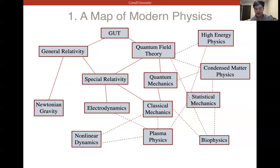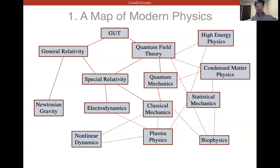We also have biophysics, combining biology and physics, using techniques from classical mechanics, statistical mechanics, quantum mechanics, and even quantum field theory. There's also plasma physics, which is basically classical mechanics, electrodynamics, statistical mechanics, and nonlinear dynamics. These are all very interesting and promising fields. Maybe there are other fields like AMO and many others. All the ideas we are going to talk about come from quantum mechanics, which serves as an essential part of most of these theories used today.